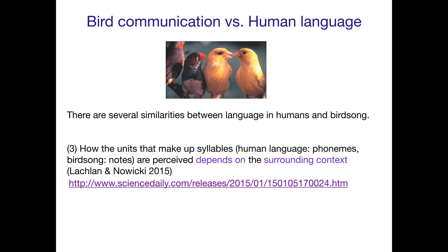Another similarity is that the units that make up syllables — in human language those would be phoneme sounds like the puh, eh, n of 'pen,' and in birdsong it's notes that make up the larger units of syllables — but how those units are perceived depends on the surrounding context. You're sensitive to what other sounds or notes are next to the thing you are producing in sequence, and that affects what you hear and what you actually perceive as a listener. That's the same in both birds and humans.